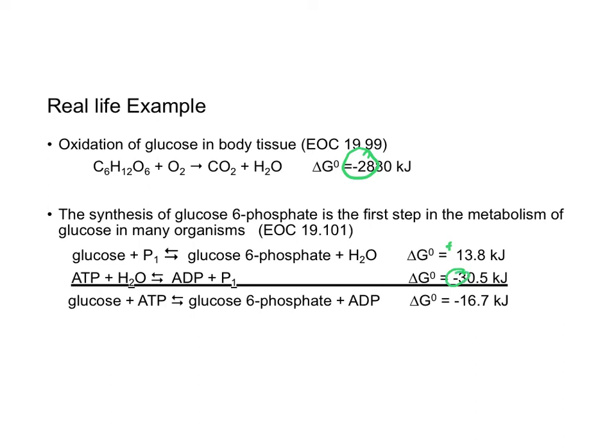Just like we've taught in all the chapters you can add equations together and essentially what you're getting rid of is the things that appear on both sides which would be the phosphate and the water. We come up with a chemical equation that converts glucose to glucose 6-phosphate and looking at the free energy values we see that it is negative and that means the reaction will proceed as written spontaneously.